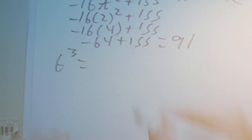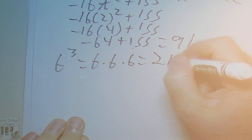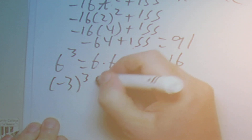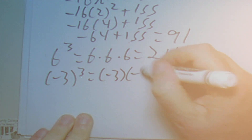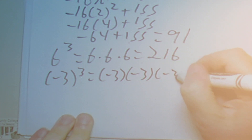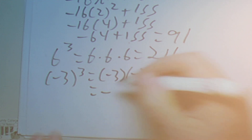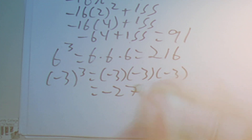The next type has you evaluate exponents. 6 to the 3 is just 6 times 6 times 6, which equals 216. Then you'll have something like negative 3 to the 3 — remember the negative is part of the question. Negative 3 times negative 3 times negative 3: negative times negative is positive, times negative is negative, and 3 times 3 times 3 is 27, so the answer is negative 27.